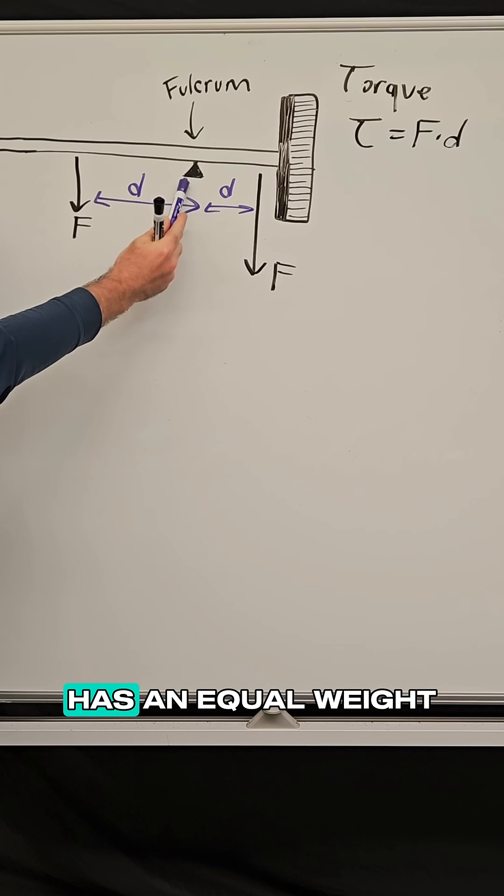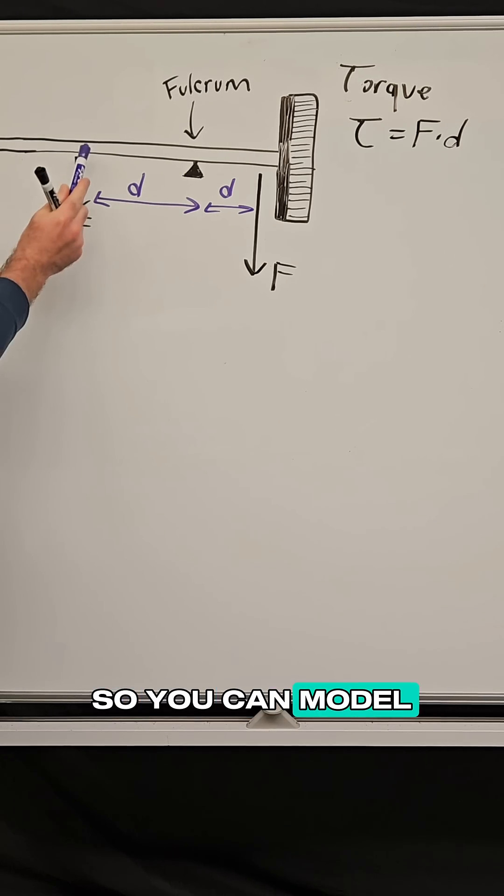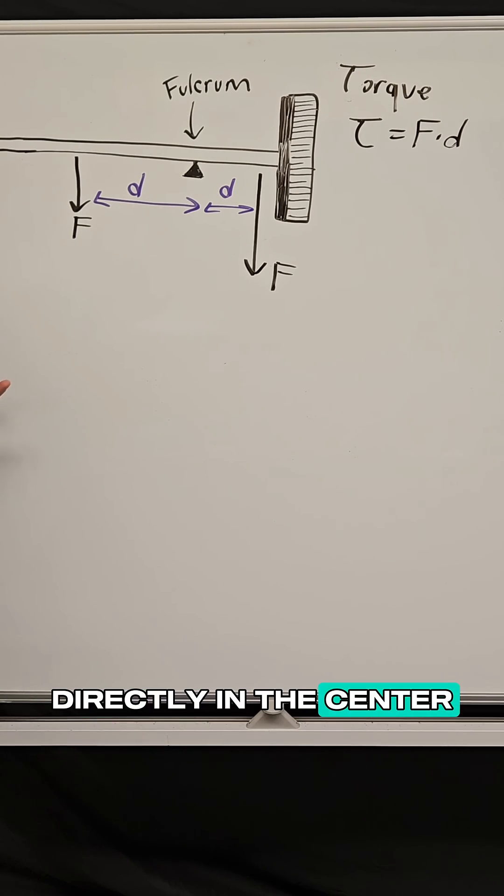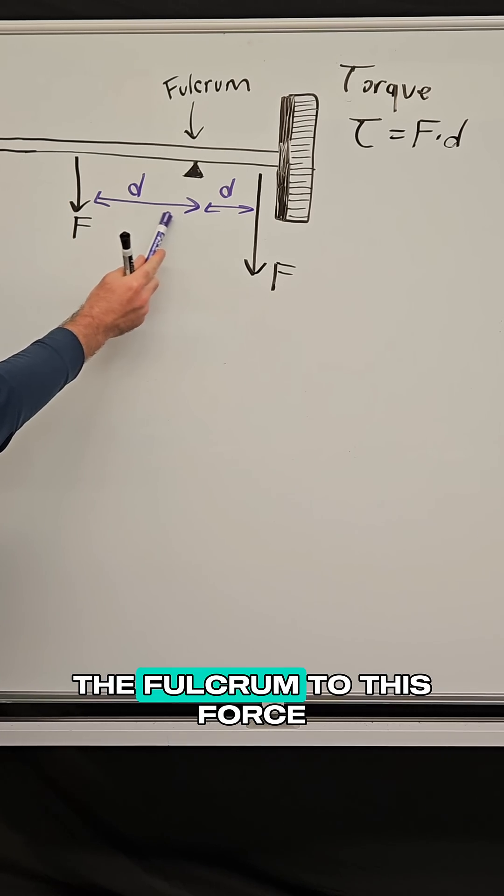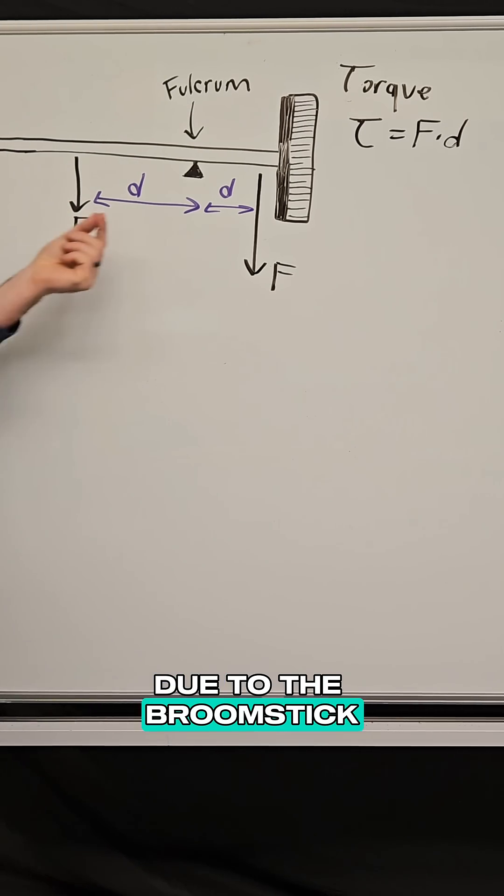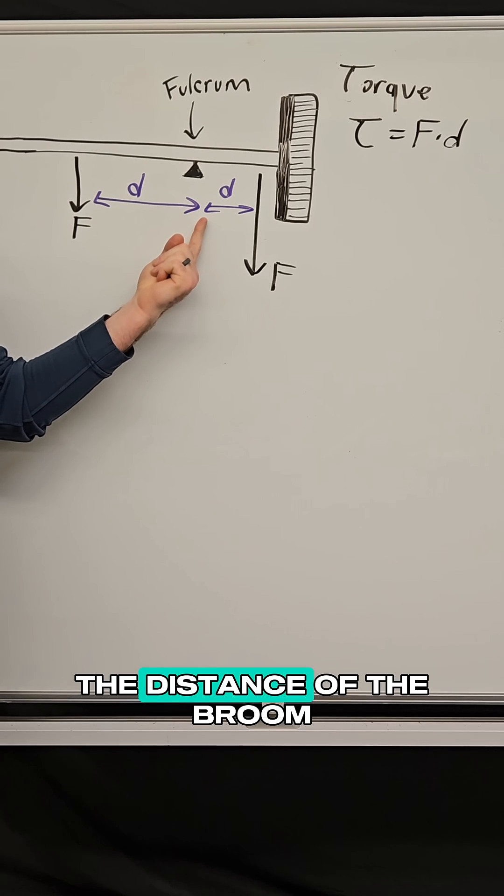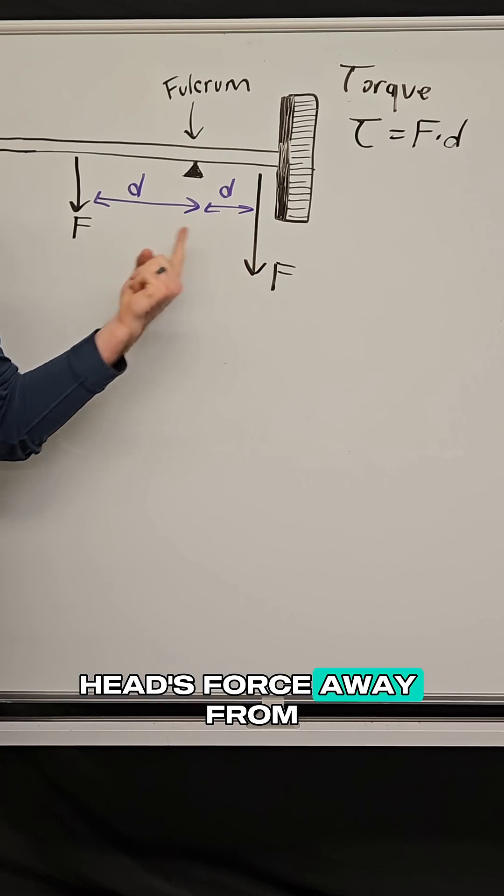And the broom handle has an equal weight all throughout. So you can model that as one force directly in the center. But what do you notice about the distance? Well, the distance from the fulcrum to this force due to the broomstick is much greater than the distance of the broom head's force away from the fulcrum.